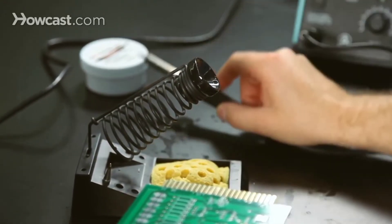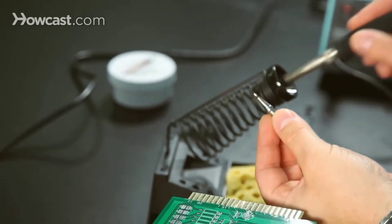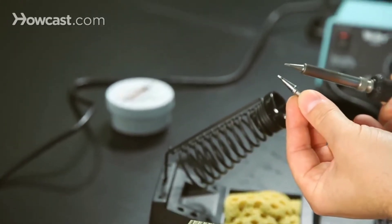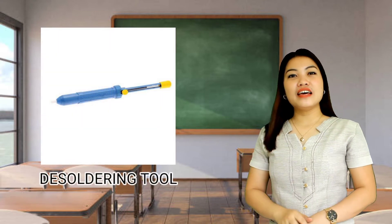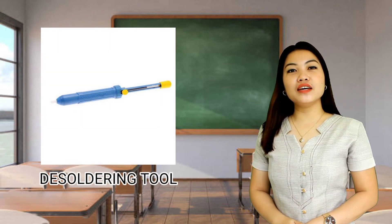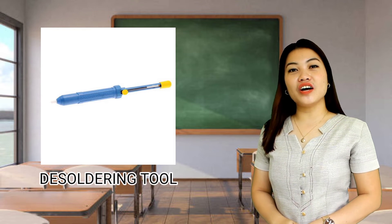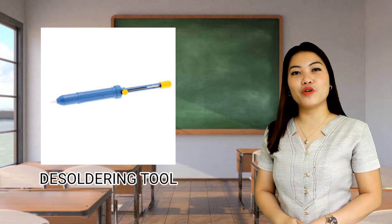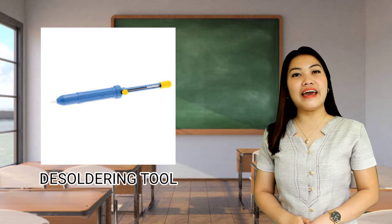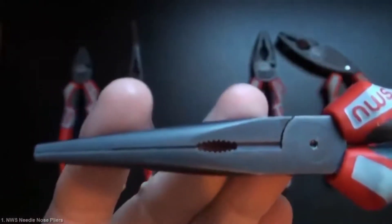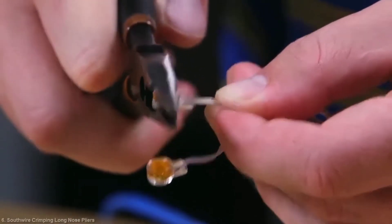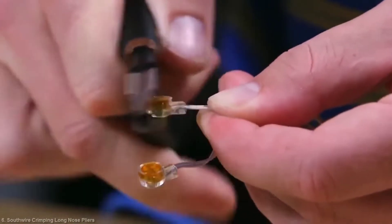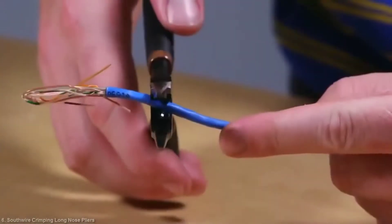This will keep the soldering iron away from flammable materials. Then, we have the desoldering tool. This is used in removing wires and electronic components on printed circuit boards for troubleshooting and repair purposes. Then, we have the long nose. It is used for holding, bending, or stretching the lead of electronic components or connecting wires.